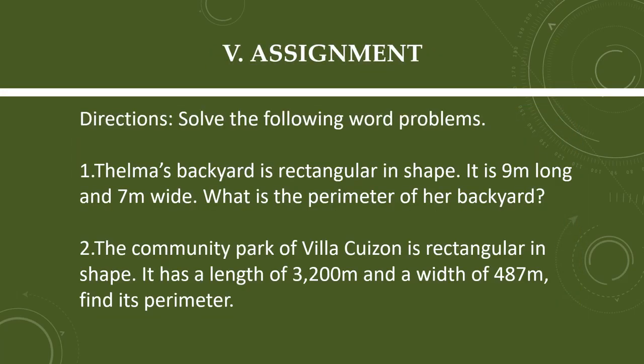The last part is the assignment. The pupils are going to solve the following word problems. Number 1: Thelma's backyard is rectangular in shape. It is 9 meters long and 7 meters wide. What is the perimeter of her backyard? Number 2: The community park of Villa Cuizon is rectangular in shape. It has a length of 3,200 meters and a width of 487 meters. Find its perimeter.